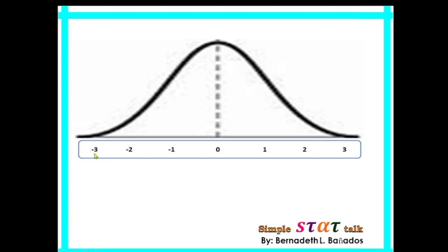Paano ito ma-obtain? That is obtained by using the value of the raw score, then minus the mean, divided by the standard deviation. Kung gagamitin mo yun, ang ma-obtain mo ay z-scores.